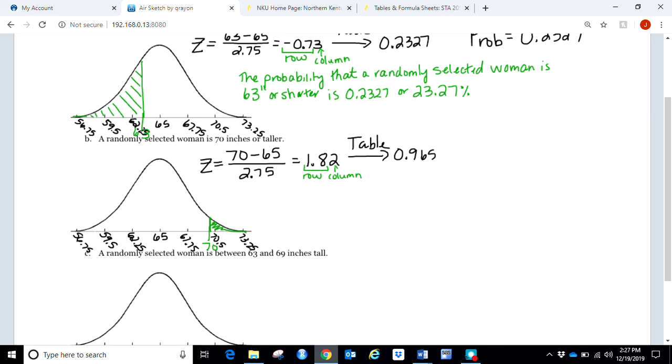However, this number I just found gave me what's to the left of that value. So on my picture, that's what's below 70 inches. So if I actually want to find the probability that you're greater than 70 inches, I'm just going to take one minus this 0.9656 to get my answer. And the reason I'm doing this one minus idea is because I'm shaded right. So this is going to give us a probability of 0.0344.